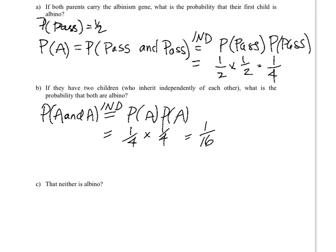In the last problem, what's the probability that neither is albino? Well, what would that look like? According to our notation, the probability neither is albino would look like this. This is not albino, and the other one is also not albino.